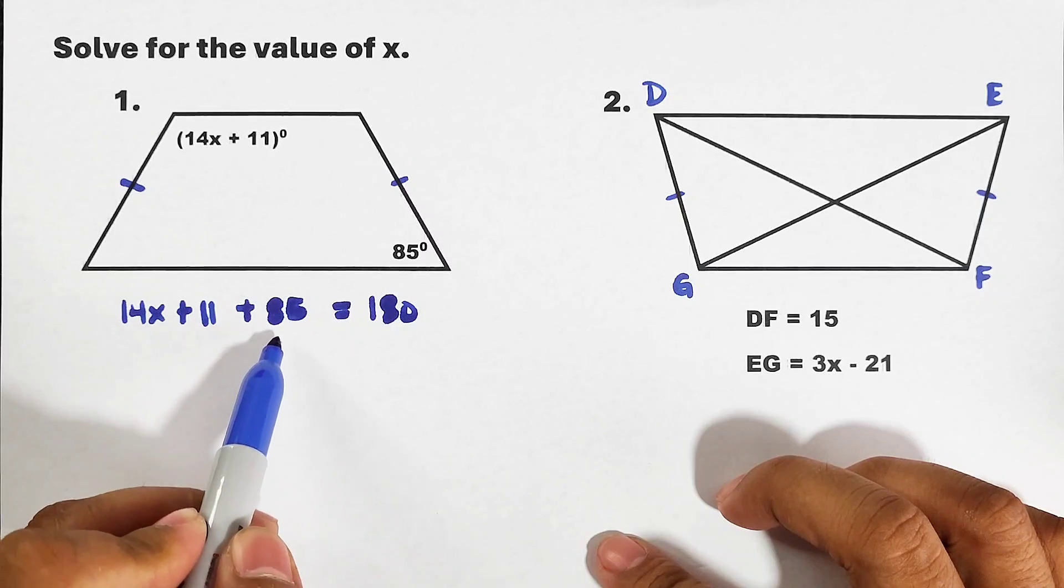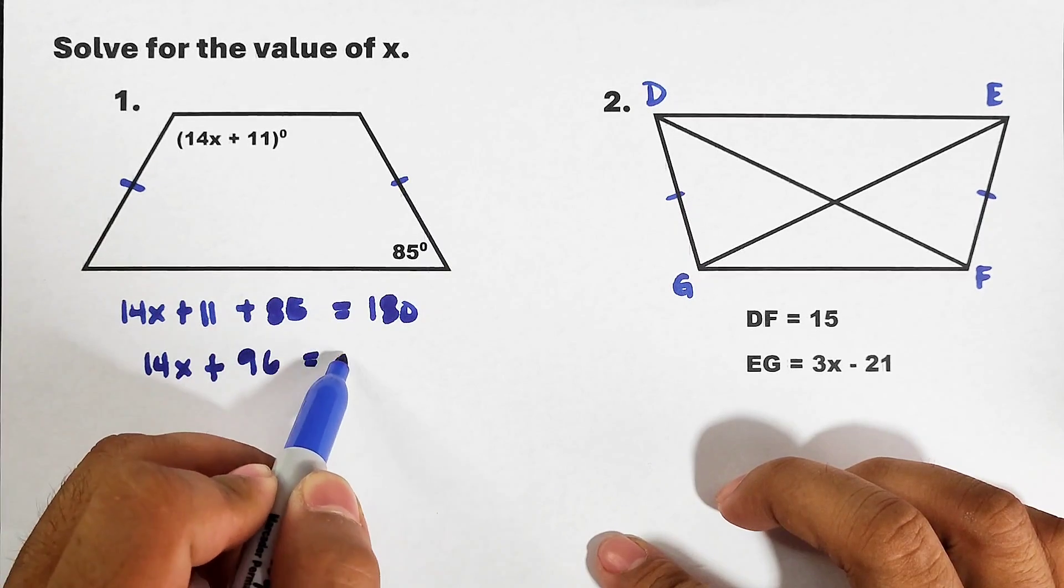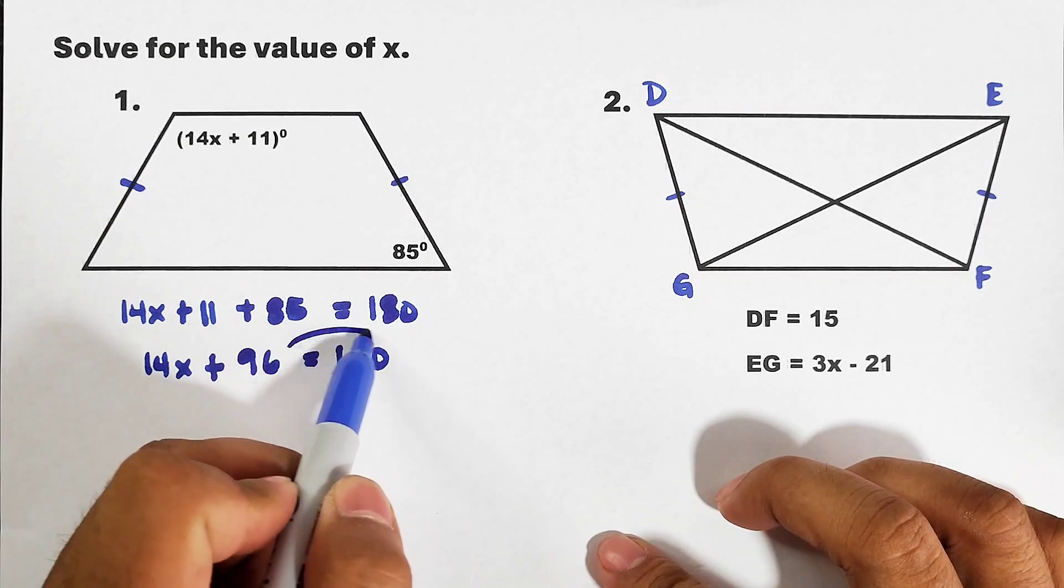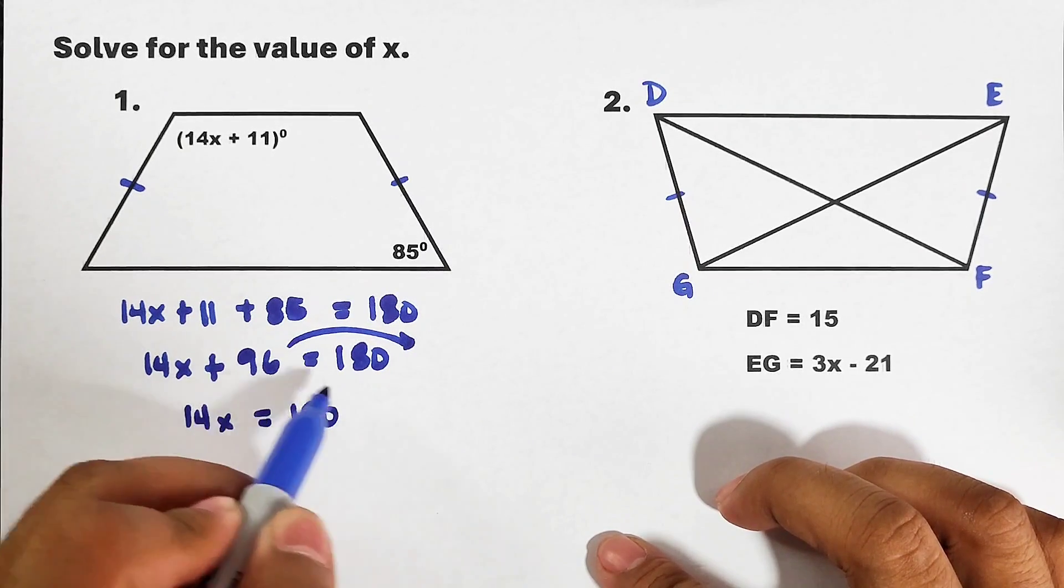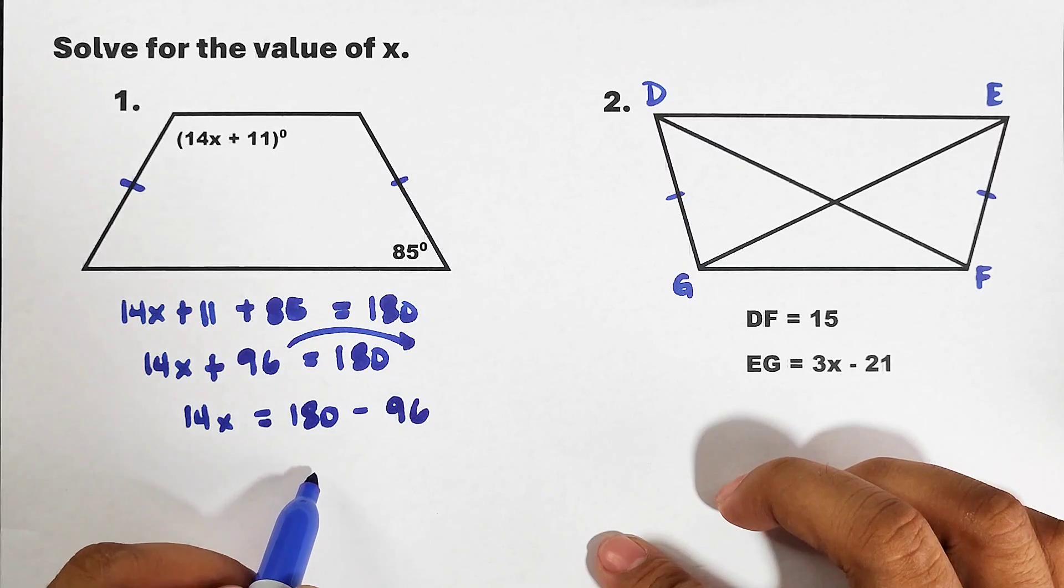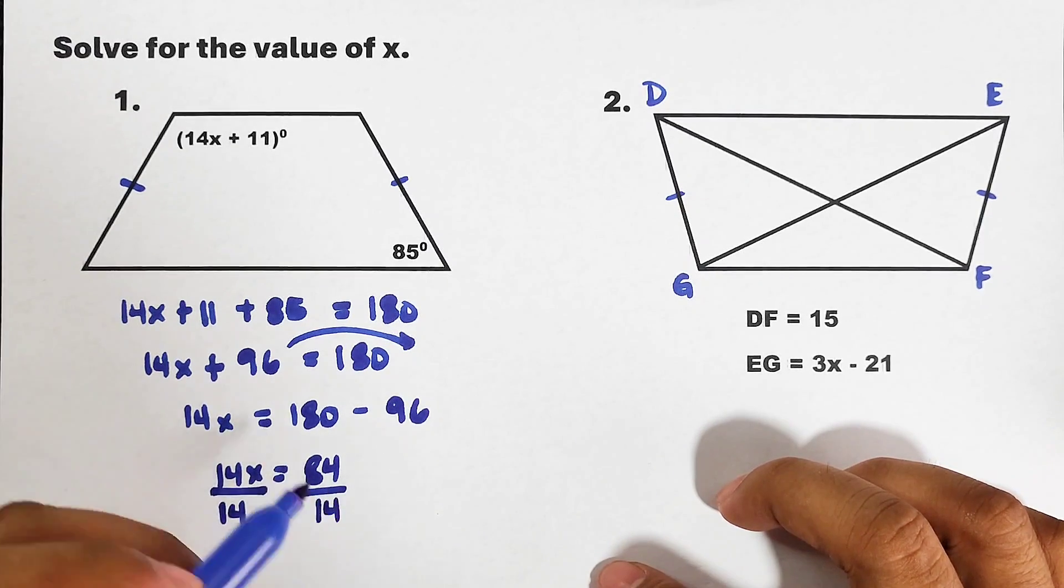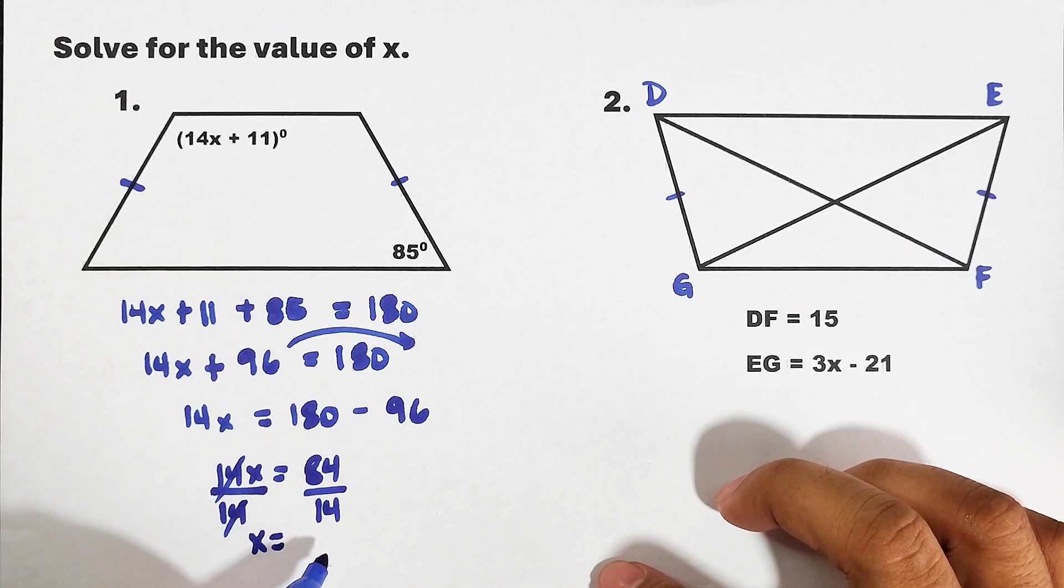Then what we need to do here is transpose negative 96 to the other side of the equation. It will become 14x equals 180 minus 96. Subtracting it, it will give you the answer of 84. On the other side we have 14x, so what we need to do is divide both sides of the equation by 14.